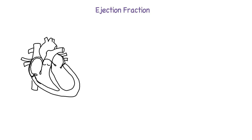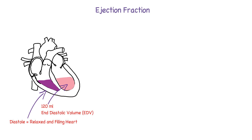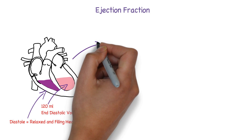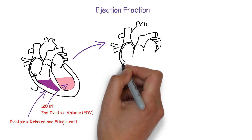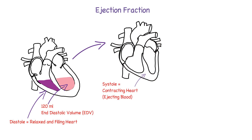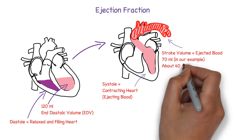A 70-kilogram healthy man's heart usually has 120 milliliters of blood in its left ventricle at the end of diastole. Diastole is the stage when the heart is relaxing. This volume is called end-diastolic volume, or EDV. About 60% of this volume is ejected when the heart goes into systole, or contraction. This amount of blood is called stroke volume, and it is usually about 70 milliliters.